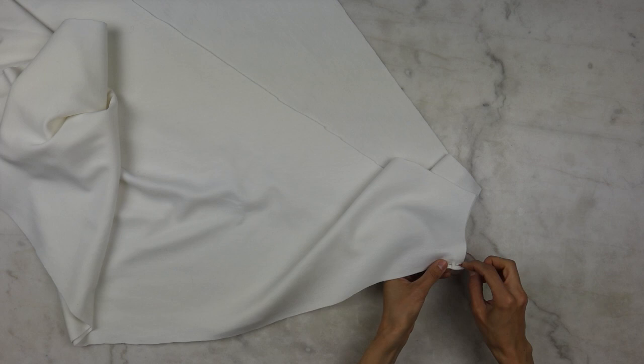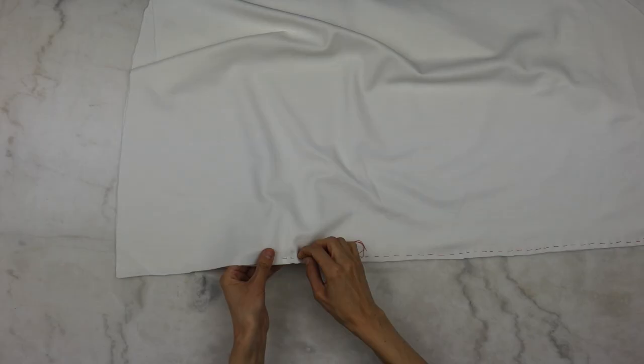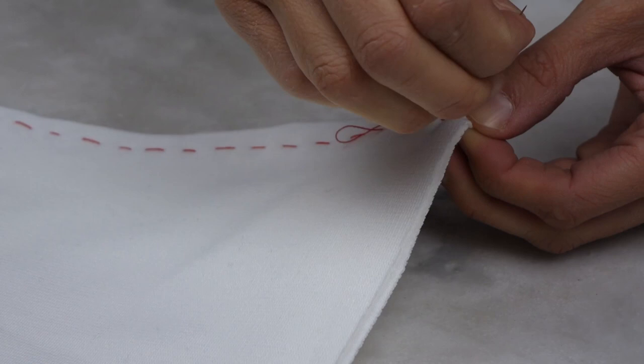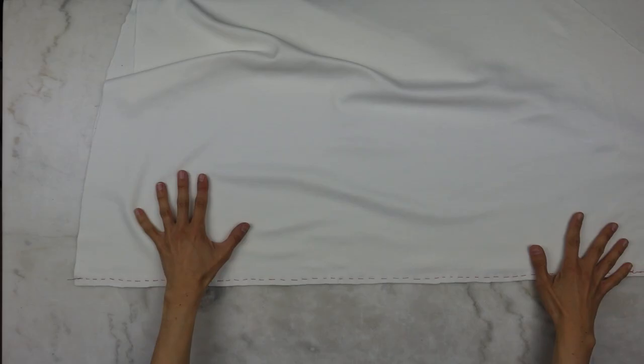When it's done, we can repeat the same operation with the next gore. I remove the number and I place my piece right sides together. Again, I'm basting quickly. To start and to end a basting thread, you don't need to make a knot. A few large back stitches are enough to hold the fabric in place. It will be really easy and quick to cut them with the tip of your scissors to remove the basting.